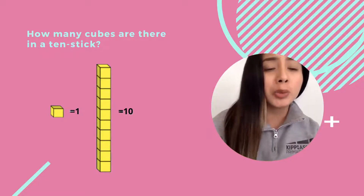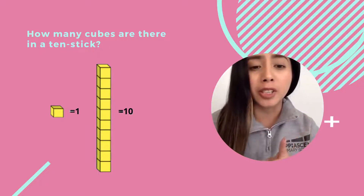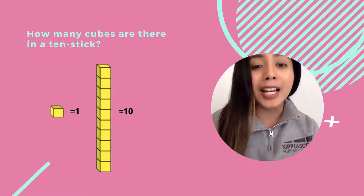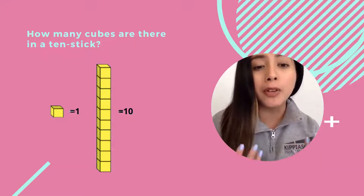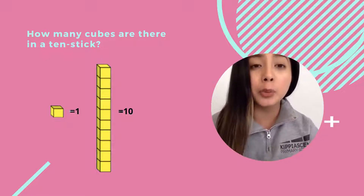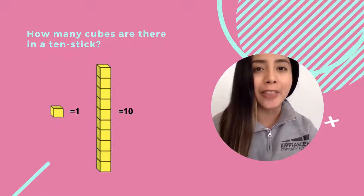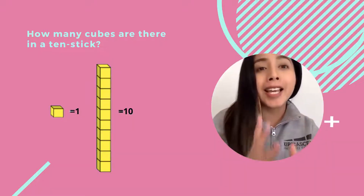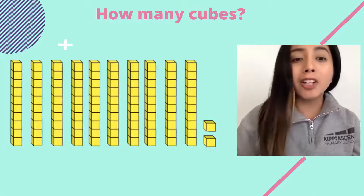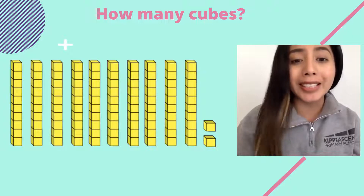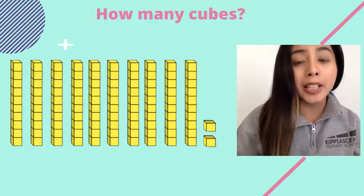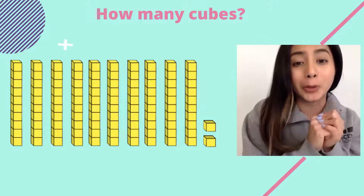How many cubes are in this stick that you see on the screen? There are 10 cubes. I can also call this a group of 10 or a 10 stick. We are going to see a lot of groups of 10 today, and that just means that there are 10 objects in that group of 10.